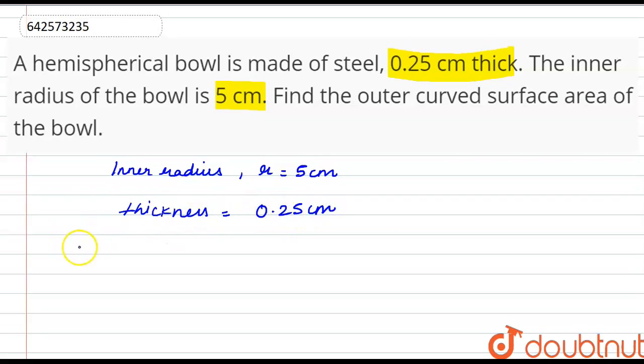So the outer radius, that is capital R, can be found out by inner radius plus thickness.